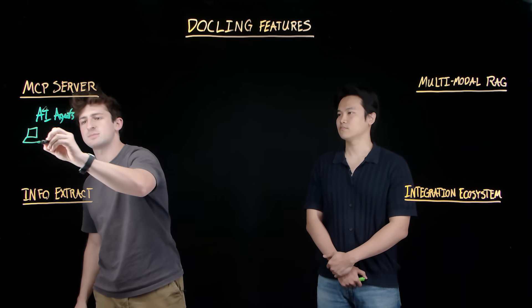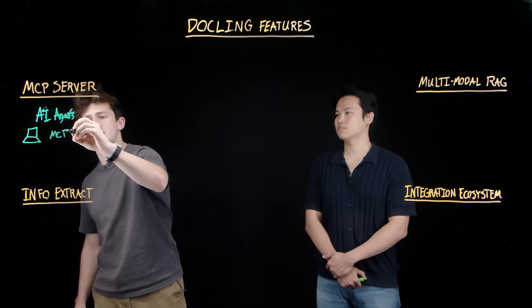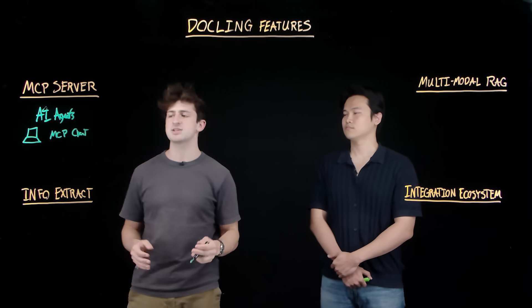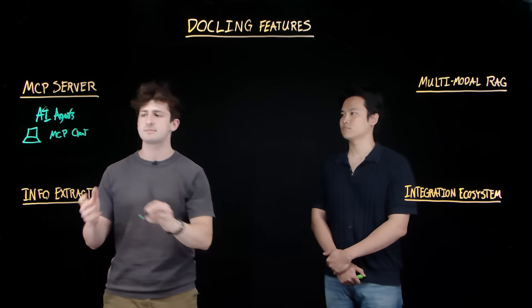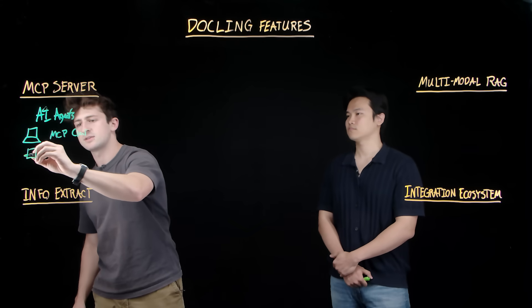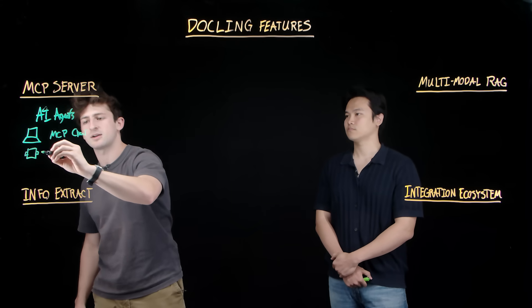So let's go ahead and draw this to be our MCP client. And we'll establish a connection to the Dockling MCP server. So we'll have this running perhaps on our local machine.